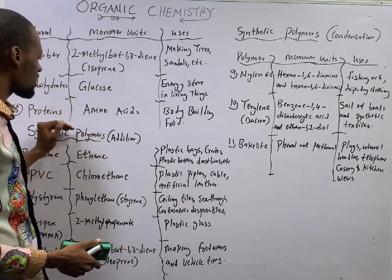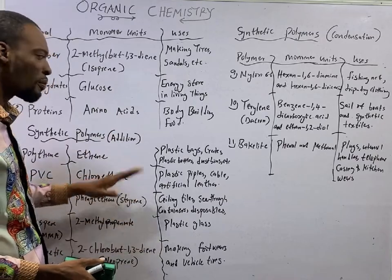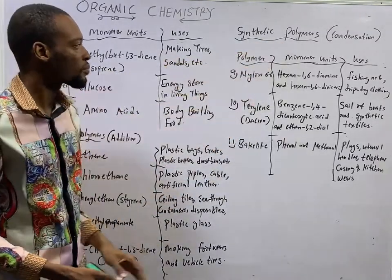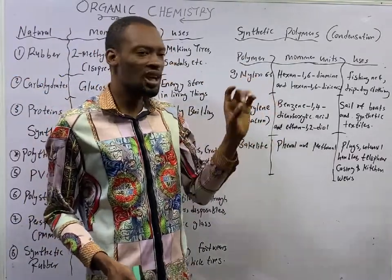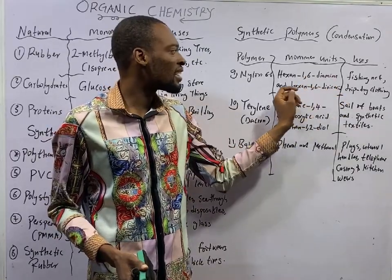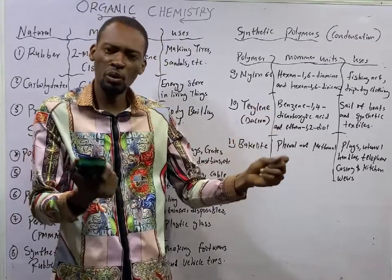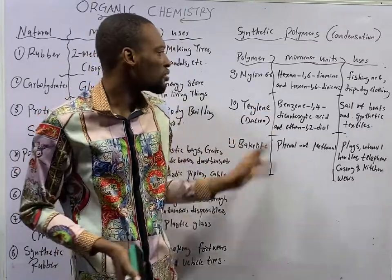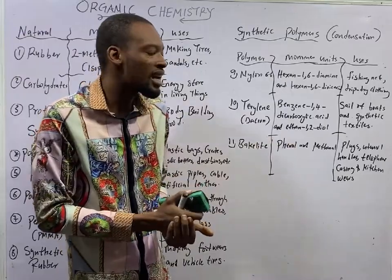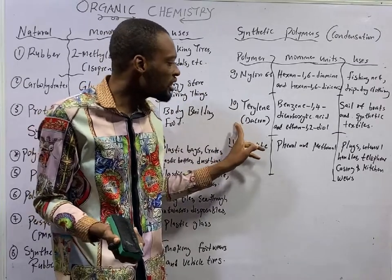You will notice that for these addition synthetic polymers, the monomers are only one type of compound. Now, for condensation synthetic polymers, number one is nylon. Nylon is made up of hexane-1,6-diamine and hexane-1,6-dioic acid — two different monomers combining to form nylon. Nylon can be used for fishing nets, dry clothing, and many other uses.